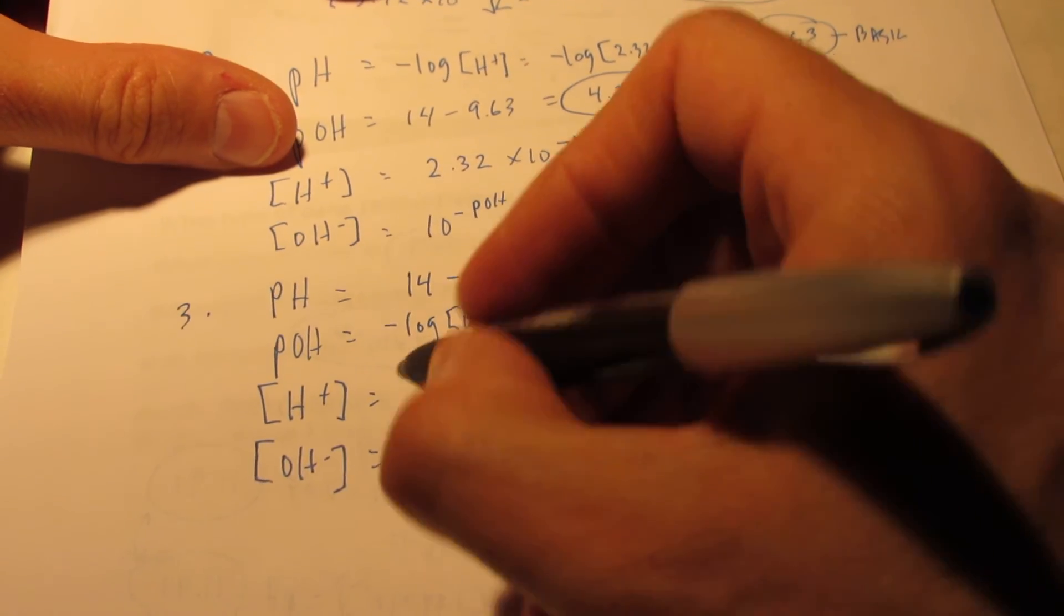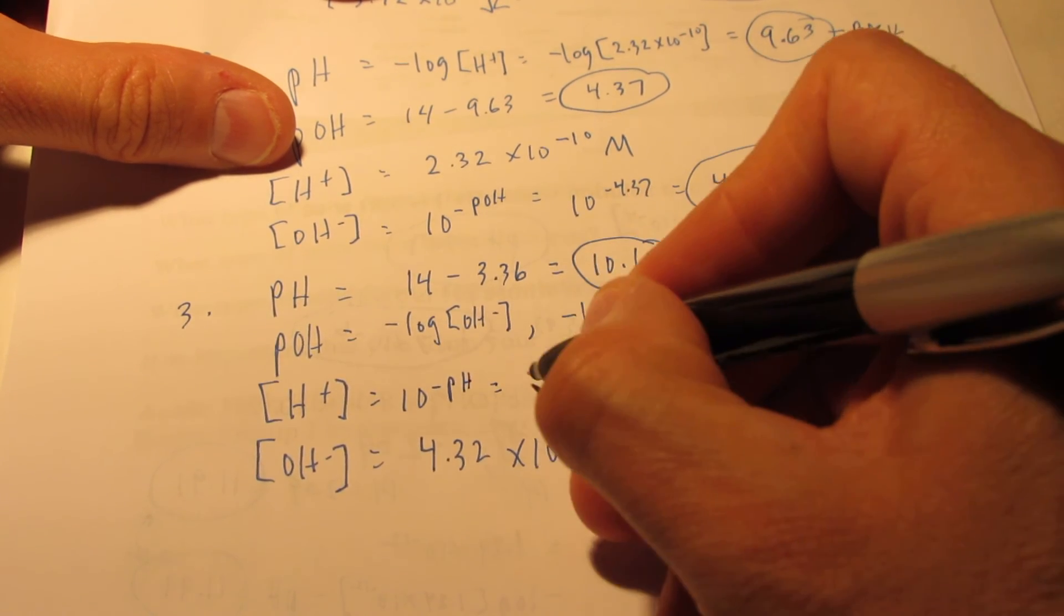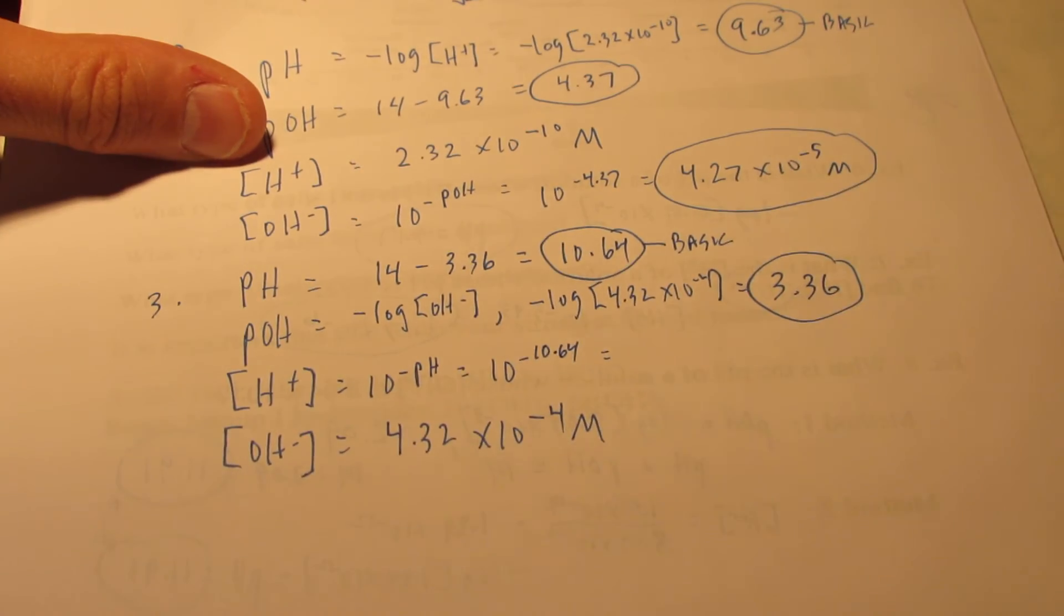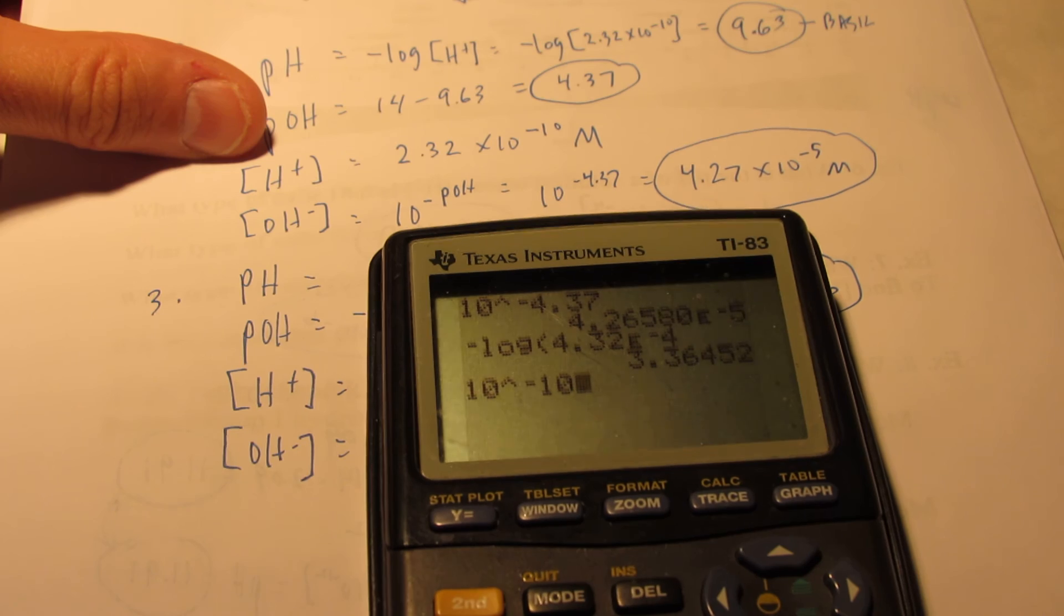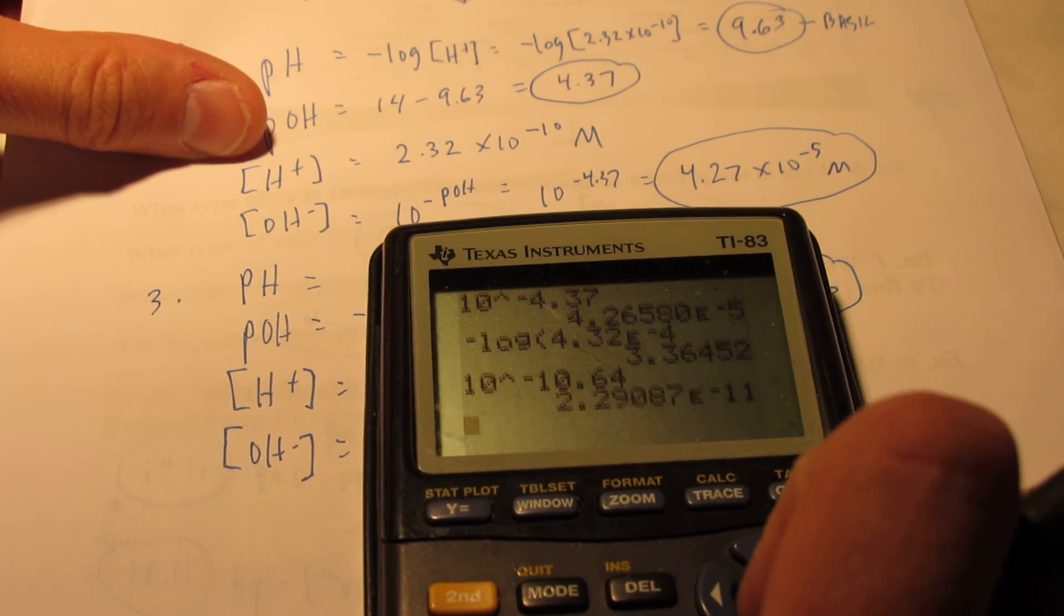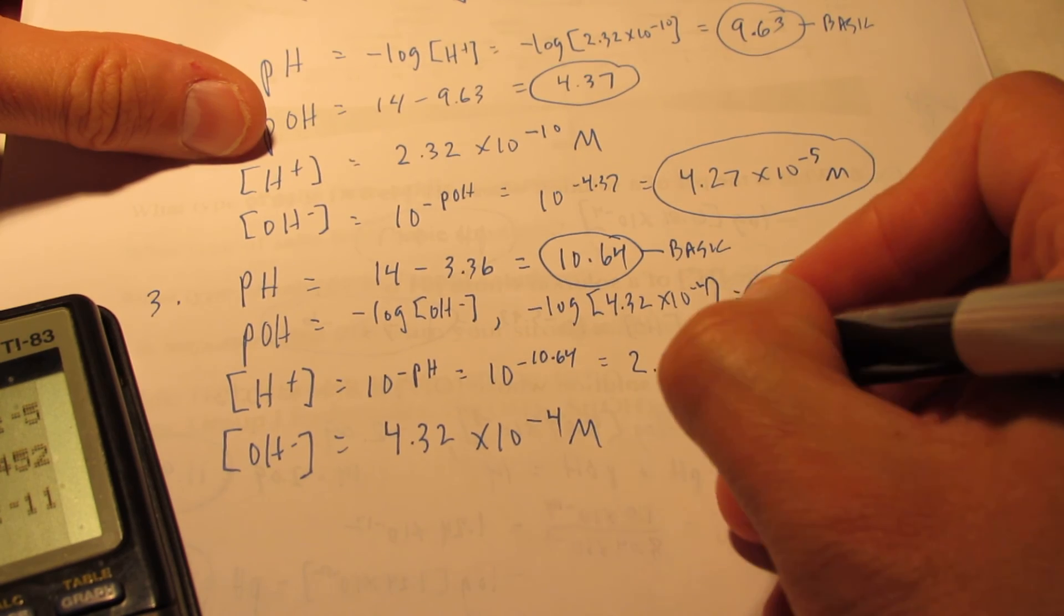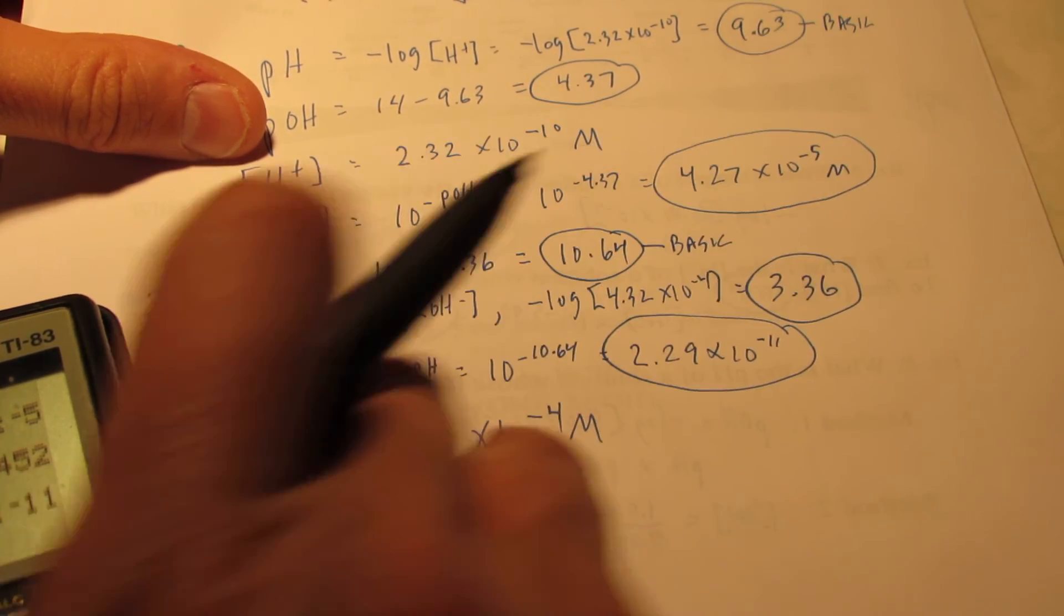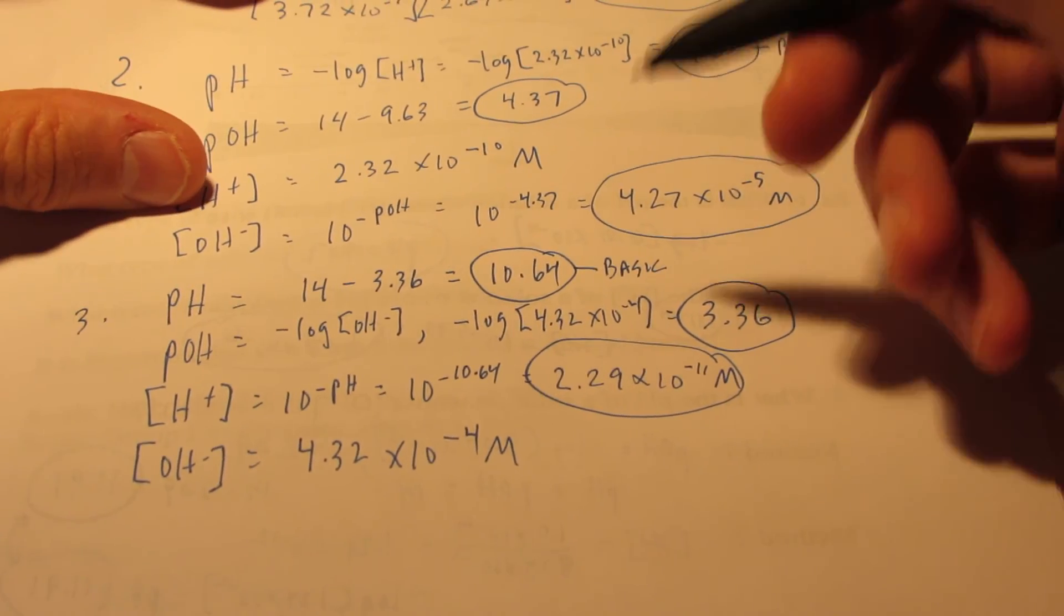And finally, the hydronium ion concentration will be 10 to the negative pH, which is 10 to the negative 10.64. Let's see, we get here 10 caret key negative 10.64. We end up with 2.29 times 10 to the negative 11th. And that would be in moles per liter. So, you can see here pretty easily.